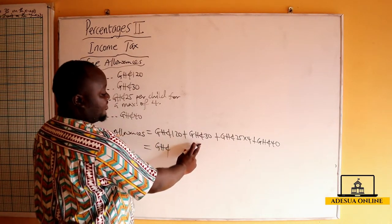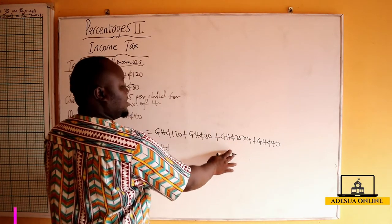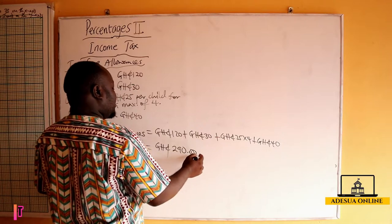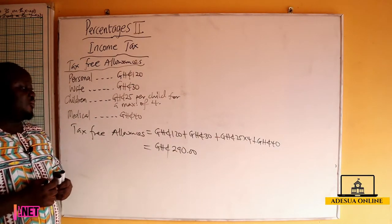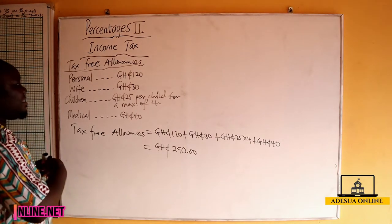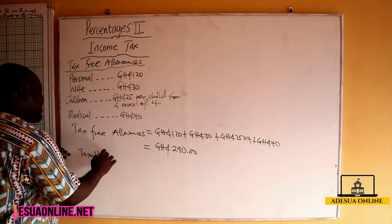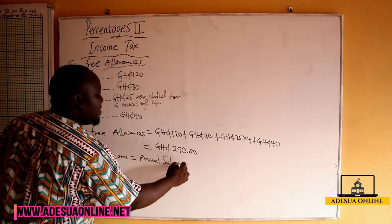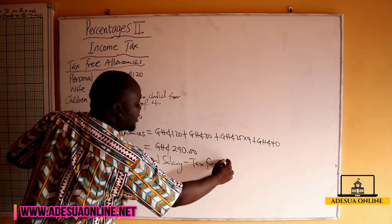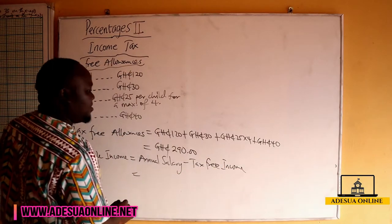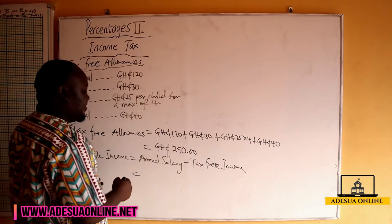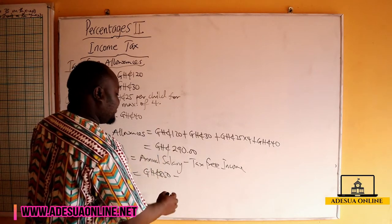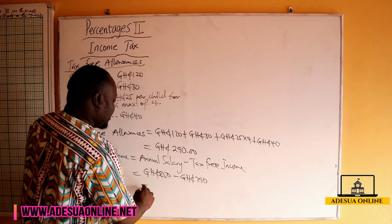Adding these up: 120 plus 30 is 150, plus 100 (25×4) is 250, and 250 plus 40 gives us 290 Ghana. So our total tax-free allowances are 290 Ghana. Now, to get our taxable income, the taxable income equals the annual salary minus the tax-free allowances. Our annual salary given in the question was 850 Ghana, minus the tax-free allowances of 290 Ghana.